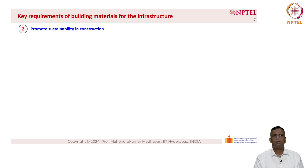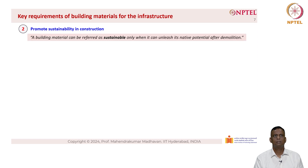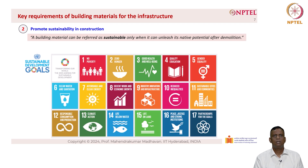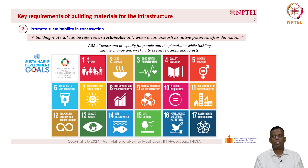The next key requirement for selecting a building material is that it should promote sustainability in construction. A building material can be referred to as sustainable only when it can unleash its native potential after demolition. The 17 sustainable development goals given by the UN aim for peace and prosperity for people on the planet while tackling climate change and preserving oceans and forests. Things directly affected by choice of building materials include good health and well-being, industry and innovation, sustainable cities and communities, responsible consumption and production, and climate change action.